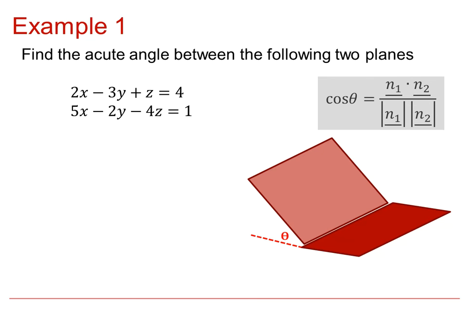In this example, we are asked to find the acute angle between the following two planes. So 2x minus 3y plus z will have normal 2, minus 3, and 1. And taking the dot product with the normal of the second plane, 5x minus 2y minus 4z, which has normal 5, minus 2, and minus 4. The scalar product then is 10, plus 6, minus 4, which equals 12.